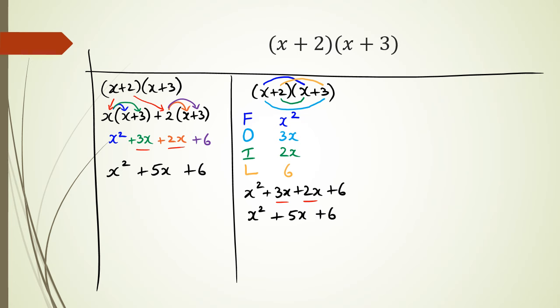That's the foil method. Then there's a third one. Now with the third one, some people like to do this where they actually create a little grid. That's a terrible grid. Where they create a grid like this.